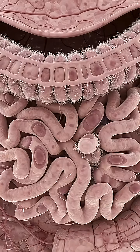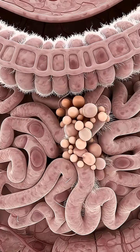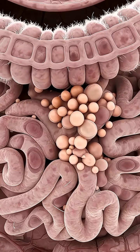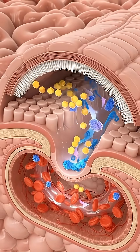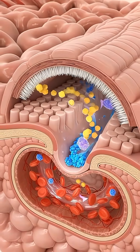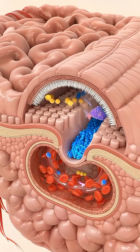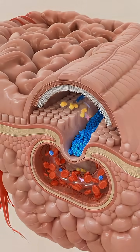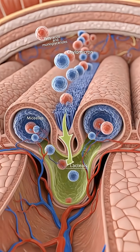Millions of tiny structures called villi and microvilli dramatically increase the surface area, allowing efficient absorption of nutrients. Carbohydrates are absorbed as glucose and proteins as amino acids. These nutrients enter the bloodstream through intestinal capillaries.